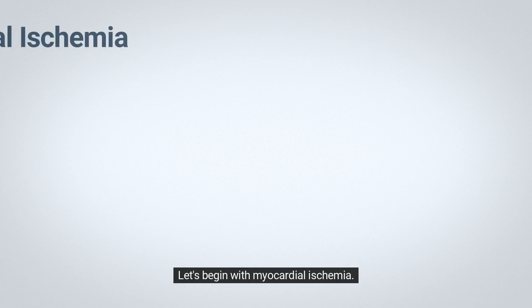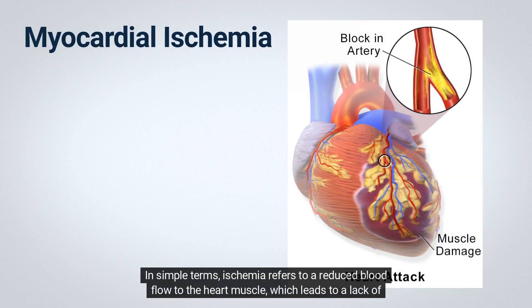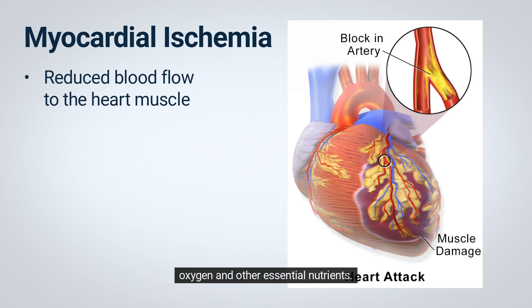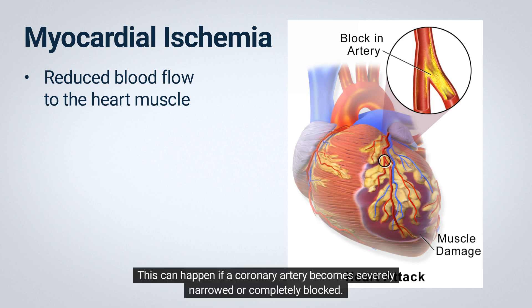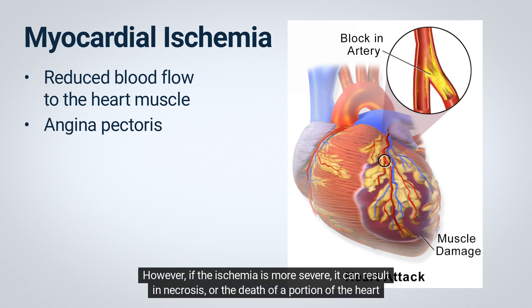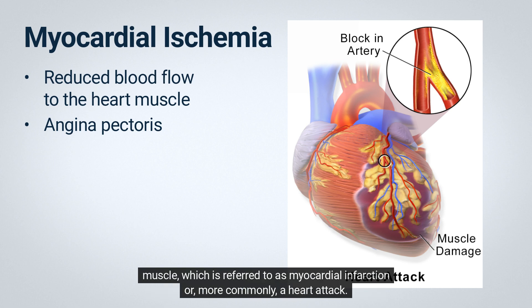Let's begin with myocardial ischemia. In simple terms, ischemia refers to a reduced blood flow to the heart muscle, which leads to a lack of oxygen and other essential nutrients. This can happen if a coronary artery becomes severely narrowed or completely blocked. When ischemia is transient, it may lead to angina pectoris during exercise. However, if the ischemia is more severe, it can result in necrosis, or the death of a portion of the heart muscle, which is referred to as myocardial infarction, or more commonly, a heart attack.